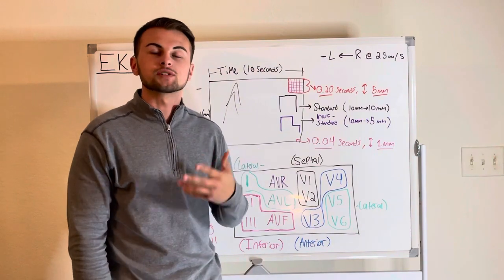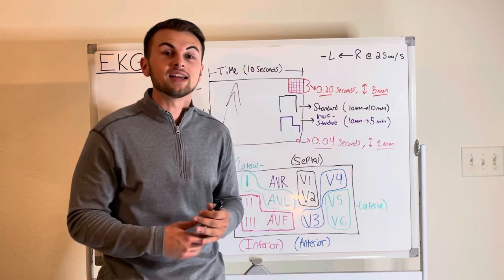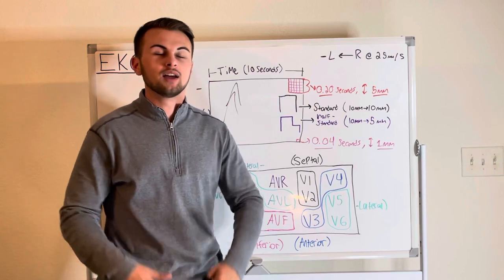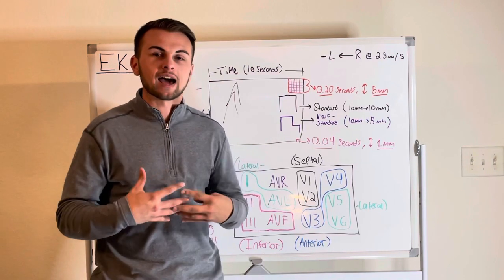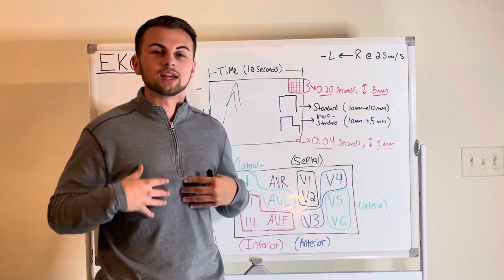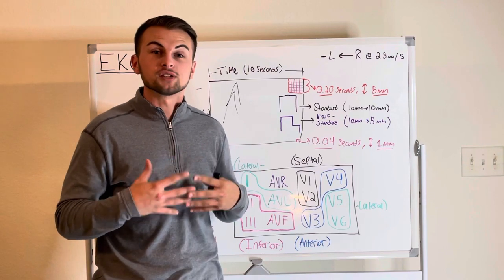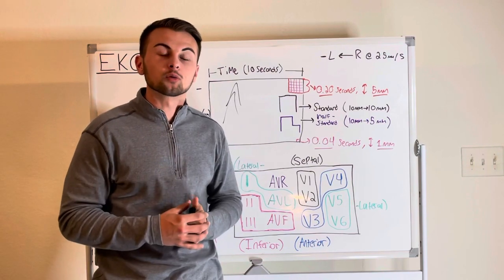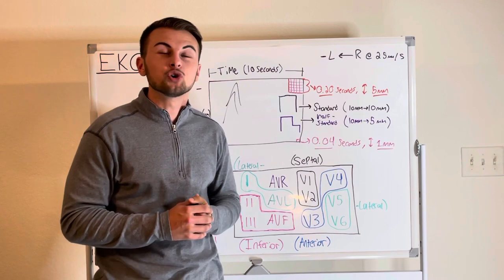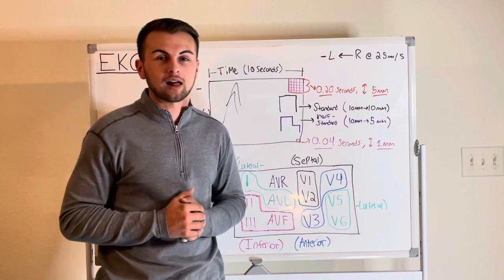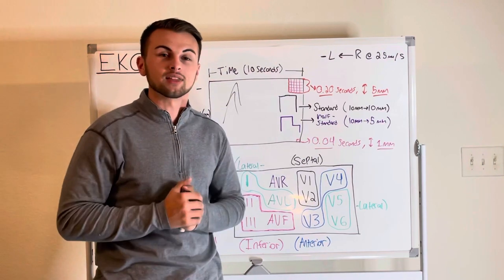Additionally we must also know that double standard is used to amplify small complexes like in our obese patients. They have a lot of adipose tissue and don't generate electricity properly so a complex that would normally be one millimeter tall would be 2 millimeters tall in double calibration because we are doubling the height.